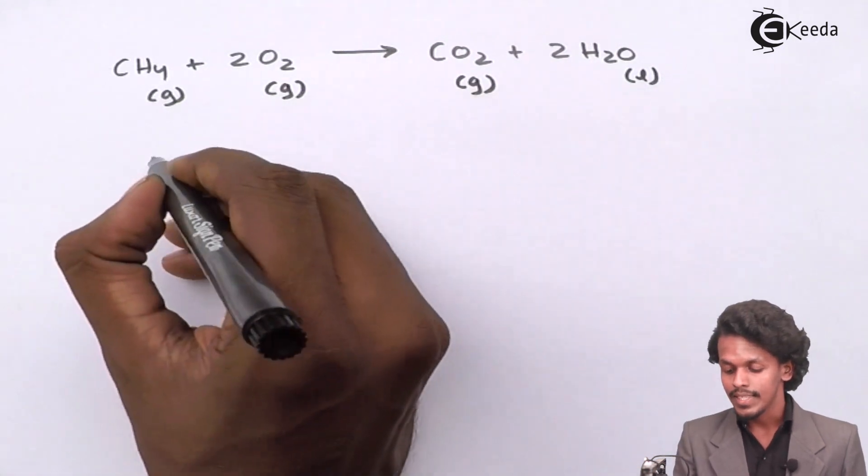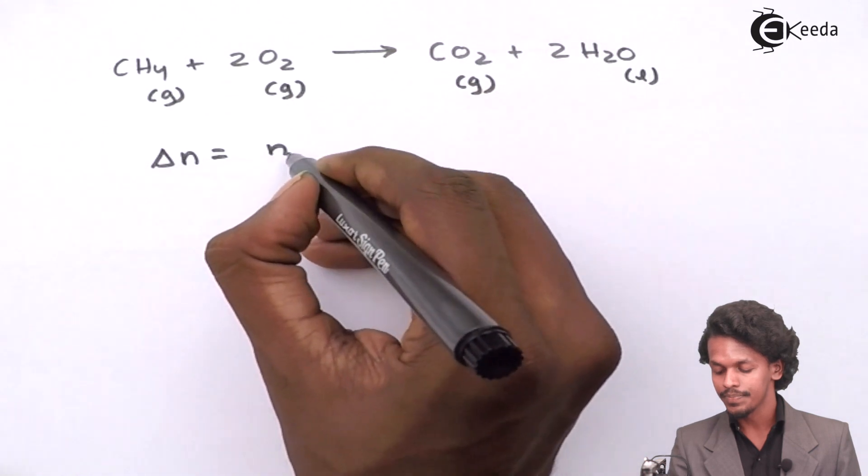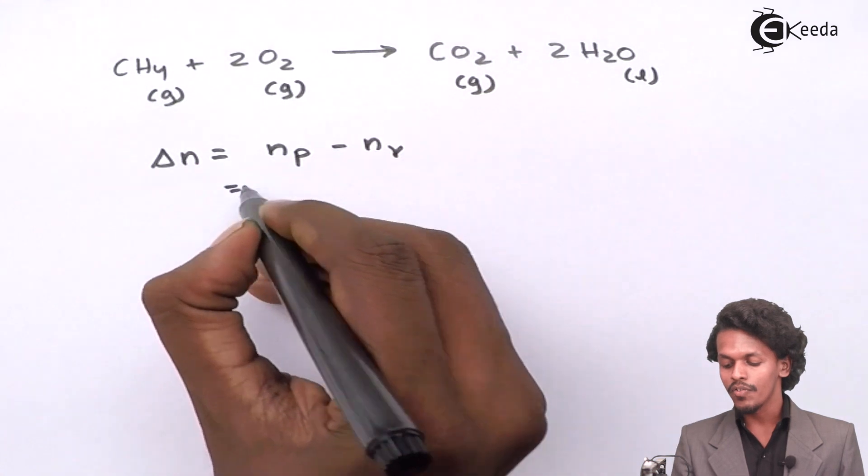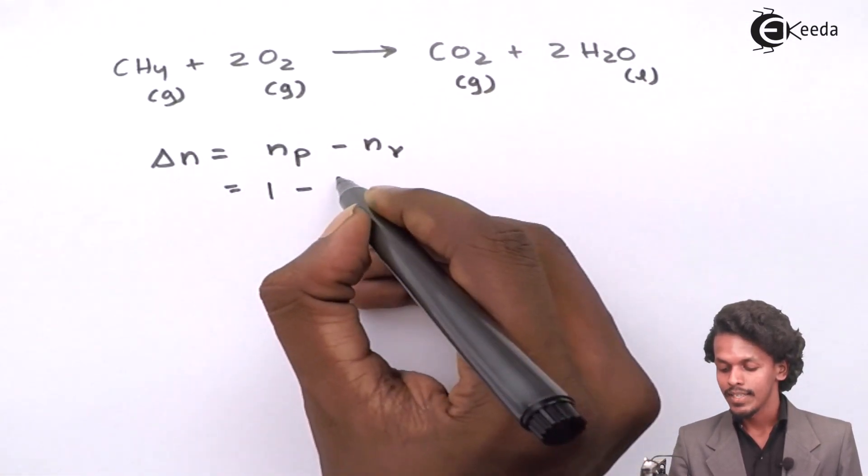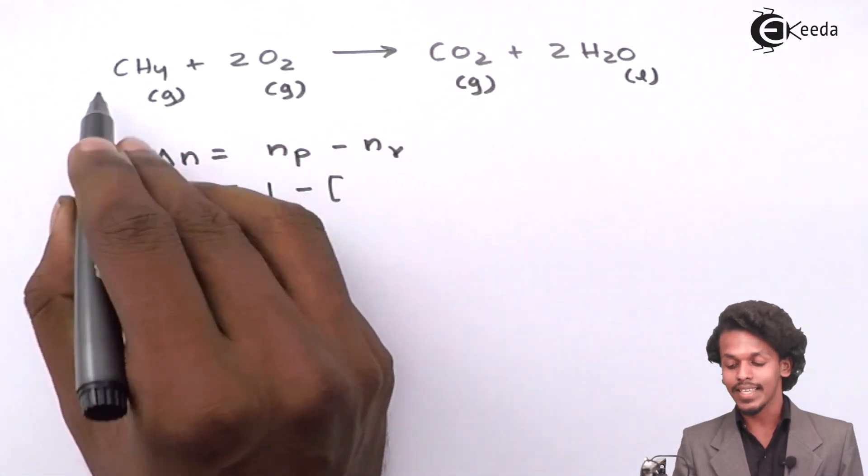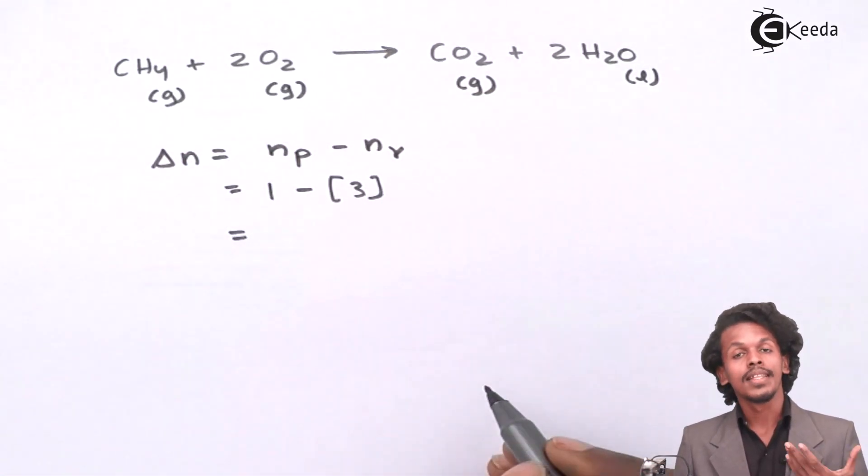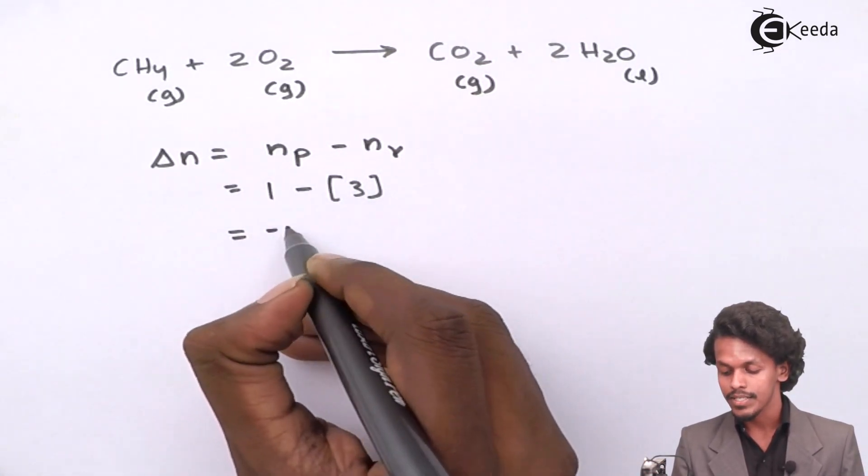In this process, delta N equals the number of moles of gaseous products minus the number of moles of gaseous reactants. The number of moles of gaseous products is 1, minus the number of moles of gaseous reactants is 3. Therefore, delta N equals 1 minus 3, which equals minus 2.